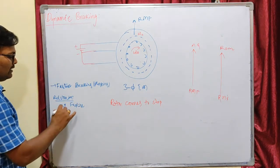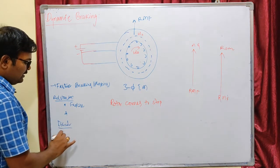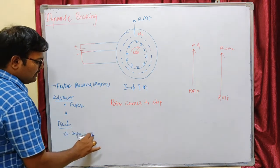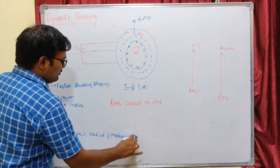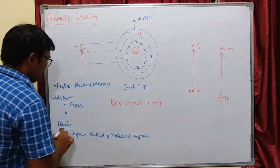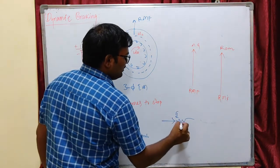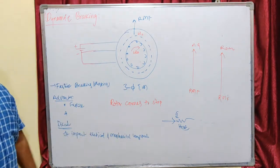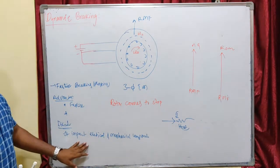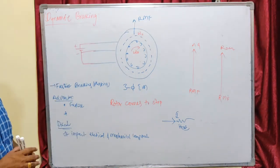Plugging can be useful for emergency stops. The disadvantages are that it impacts electrical and mechanical components heavily. There is a huge current flow in plugging mode that produces much heat in the resistors, so plugging is used only under very rare conditions. This concludes dynamic braking and the braking of machines overall.